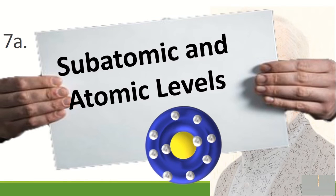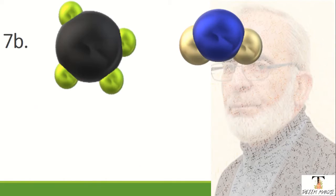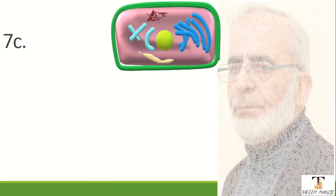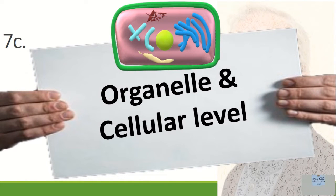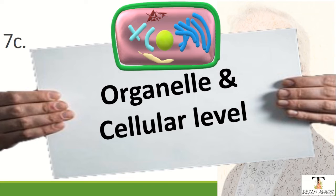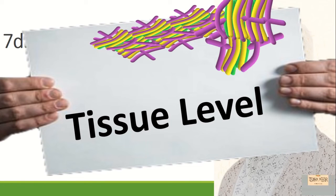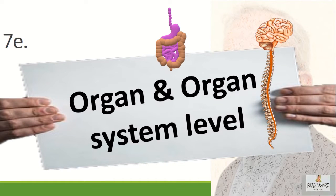One sub-topic is the sub-atomic level, then the atomic level, then the molecular level, which is created from molecules. Then the cellular level, which is called the cell. After cells, we talk about the tissue level — so when you have cells, you have tissues. Then you have organs.